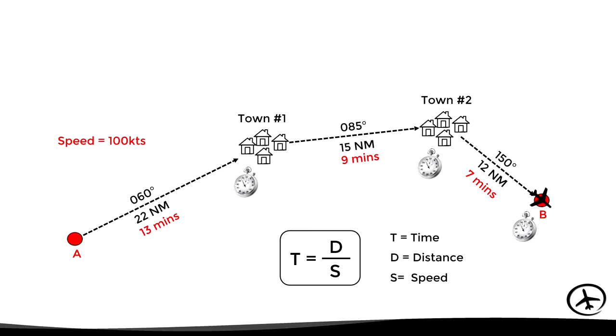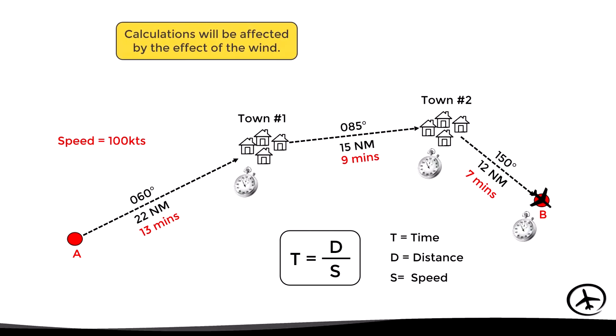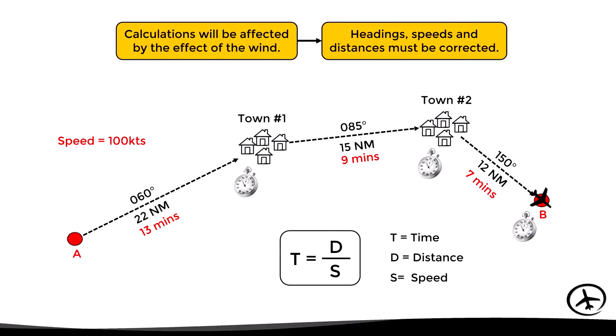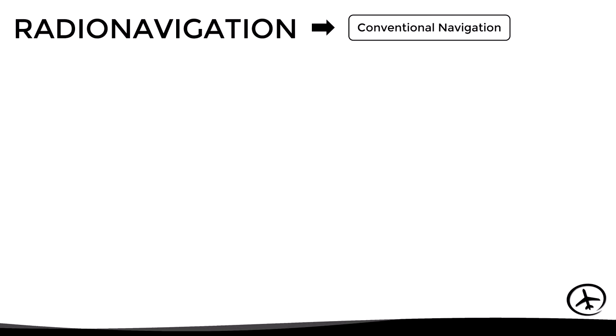The calculated parameters of heading, speed, and time can be affected by the wind, so it is important to correct these values depending on the wind direction and speed. Let's now look at radio navigation, also known as conventional navigation.